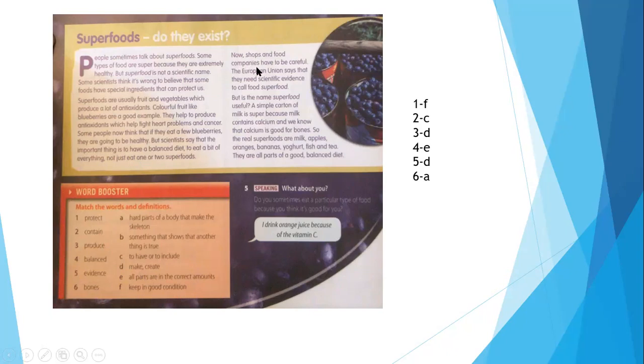Now, shops and food companies have to be careful. The European Union says that they need scientific evidence to call a food superfood. But is the name superfood useful? A simple carton of milk could be called superfood because milk contains calcium and we know that calcium is good for bones. So we can say that milk is superfood. Here we have scientific evidence. This is the example of superfood.